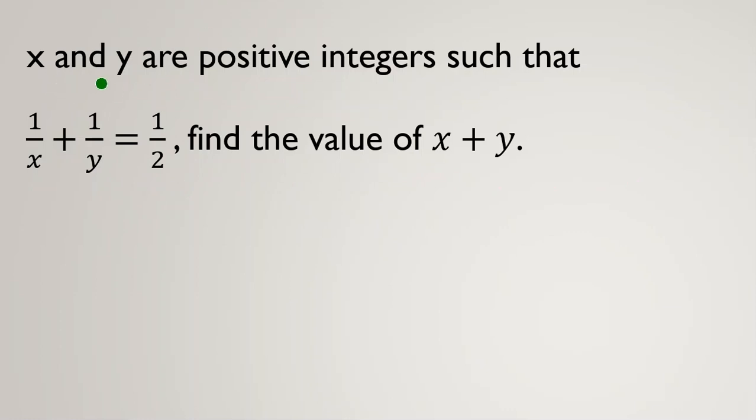Because x and y are integers and here we have denominators, we should get rid of this denominator by multiplying to a good number. Because we have x, y, and 2, we should multiply both sides by 2xy.